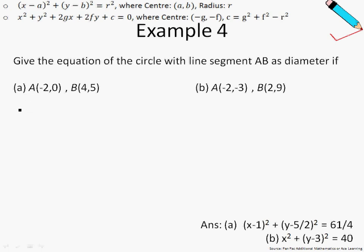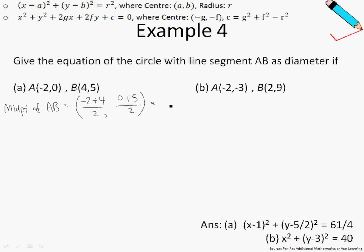Let us first find the midpoint of AB. Recall the midpoint formula: it will just be the x-coordinate of A plus the x-coordinate of B divided by 2, and the y-coordinate of A plus the y-coordinate of B divided by 2. Working this out, I will just get 1 and 5 over 2.